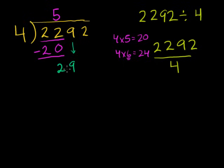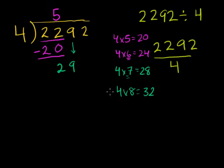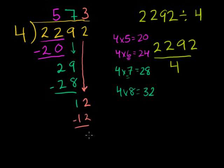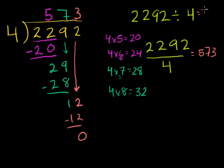So we brought down the 9. 4 goes into 29 how many times? It goes into it at least 6 times. 4 times 7 is 28, so it goes in at least 7 times. 4 times 8 is 32 — so it can't go in 8 times. 4 goes into 29, 7 times. 7 times 4 is 28. 29 minus 28 is 1. Now we bring down this 2 and get 12. 4 goes into 12 — that's easy. 4 times 3 is 12, so 4 goes into 12, 3 times. 12 minus 12 is 0 — no remainder. So 4 goes into 2,292 exactly 573 times. 2,292 divided by 4 is equal to 573.